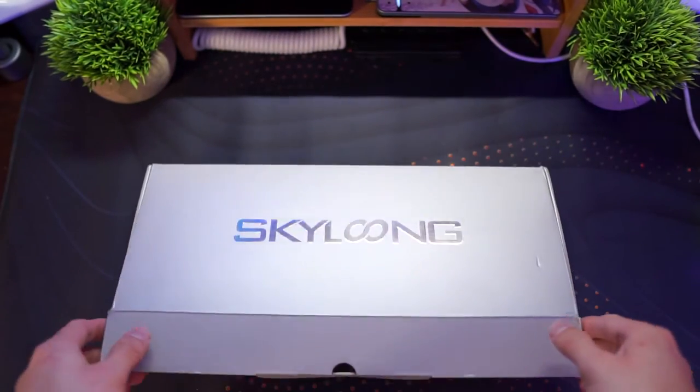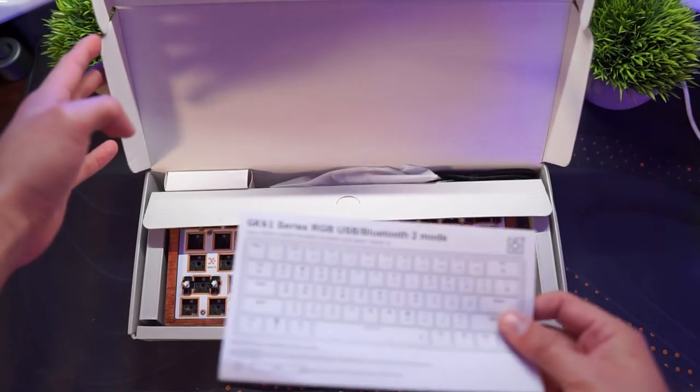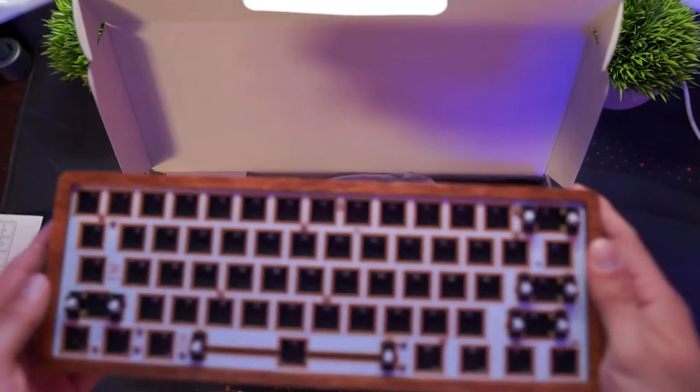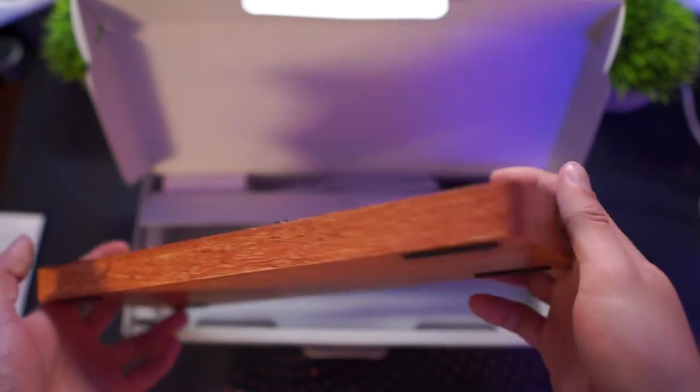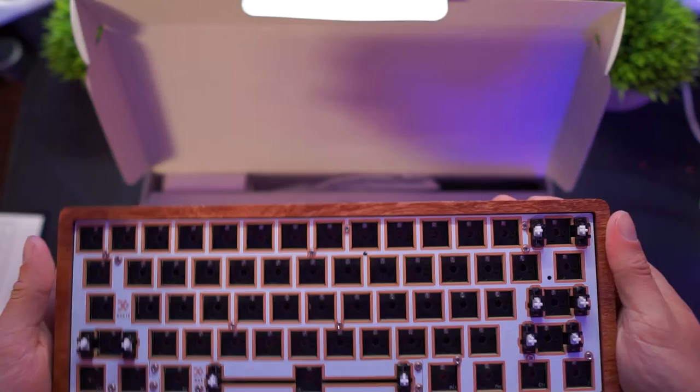Alright, so first thing we have is the keyboard kit itself. Opening it up, we have the layout of the keyboard on a nice little convenient sheet. The DIY kit that's mostly fully assembled with stabilizers and plate and PCB already mounted, with four rubber feet on the bottom.